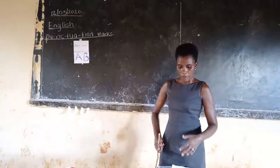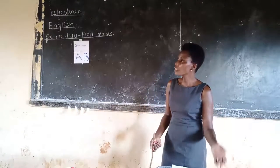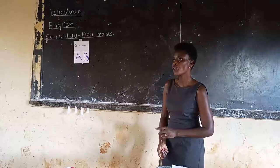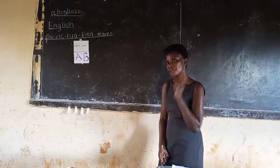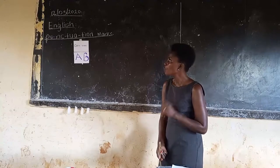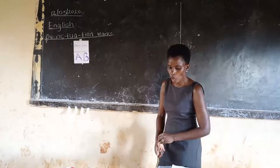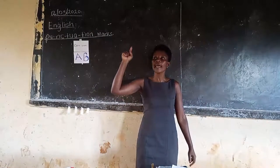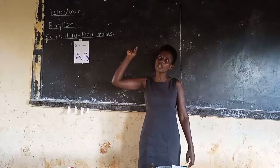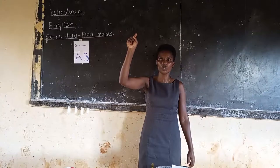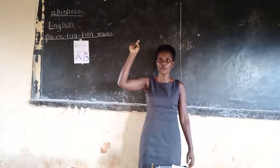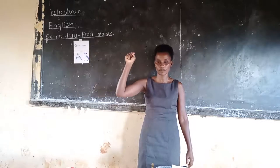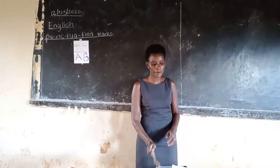When we use full stops, we also looked at that. We say that when you write a sentence, after writing a sentence, you put a full stop at the end. Can we all write a full stop in the air? Everybody, one, two, three, go. Good. It's like a dot. We begin with a capital letter and end with a full stop. Thank you very much.